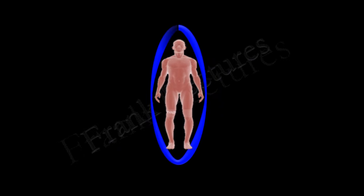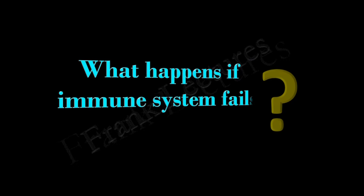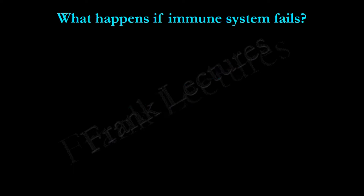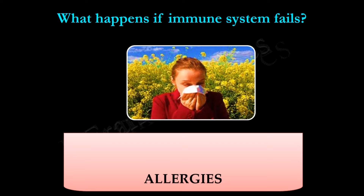One consequence of immune system failure is allergy. In allergy, the immune system overreacts. The immune system of some people is very sensitive to substances which are generally harmless in most people, but the immune system of the affected individual considers those substances as dangerous and reacts.